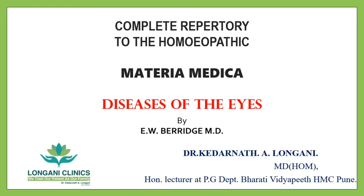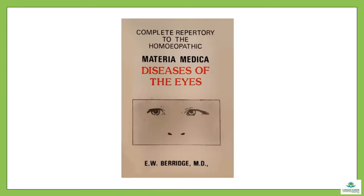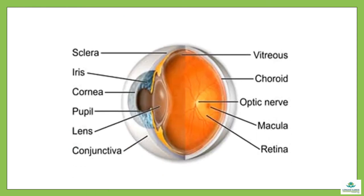This is the complete repertory to the Homeopathic Materia Medica Diseases of the Eyes by Dr. Edward William Berridge. This is the cover page of the Berridge Eye Repertory. The structures of the eye shown include sclera, iris, cornea, pupil, lens, conjunctiva, vitreous, choroid, optic nerve, macula, and retina.